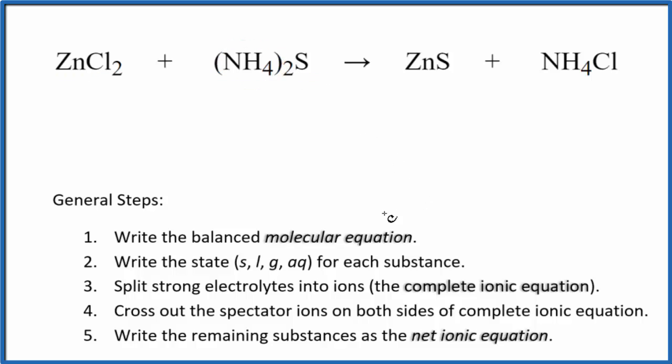The first thing we need to do with net ionic equations is balance the molecular equation. I can see that I have two chlorine atoms here and just one here, so I'm going to put a 2 in front of the ammonium chloride. That balances the chlorines. I have two ammonium ions, but that's good. I have two ammonium ions here, and I have one zinc and one sulfur on each side. So this is the balanced molecular equation.